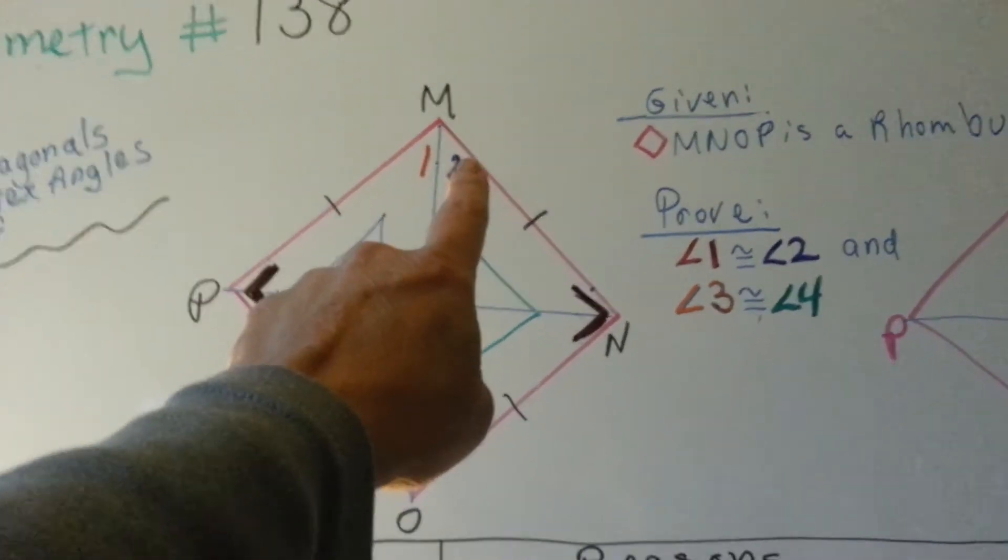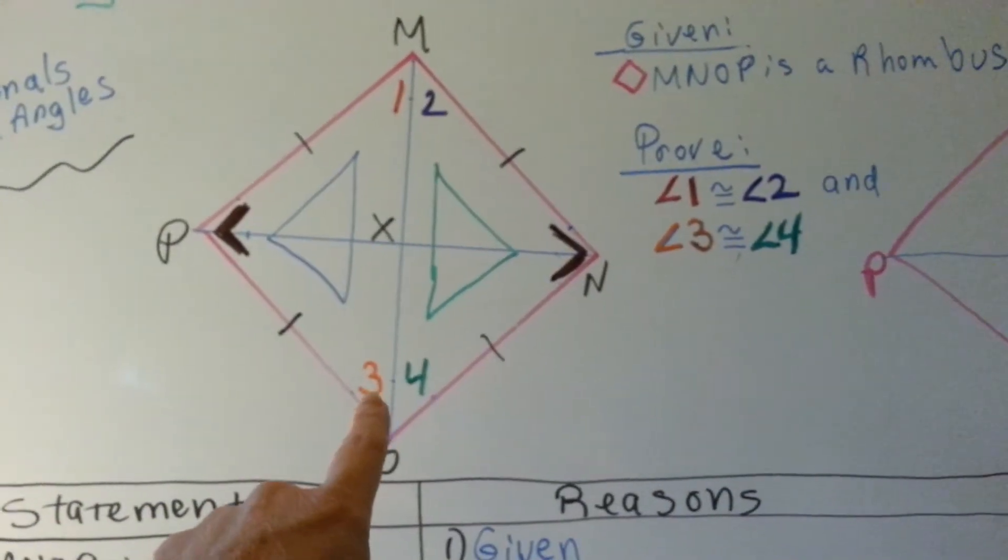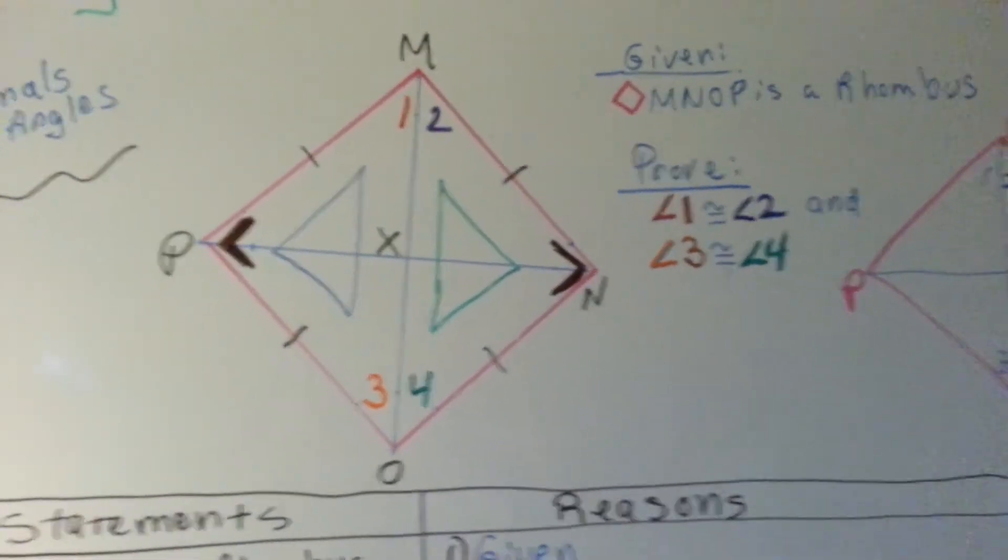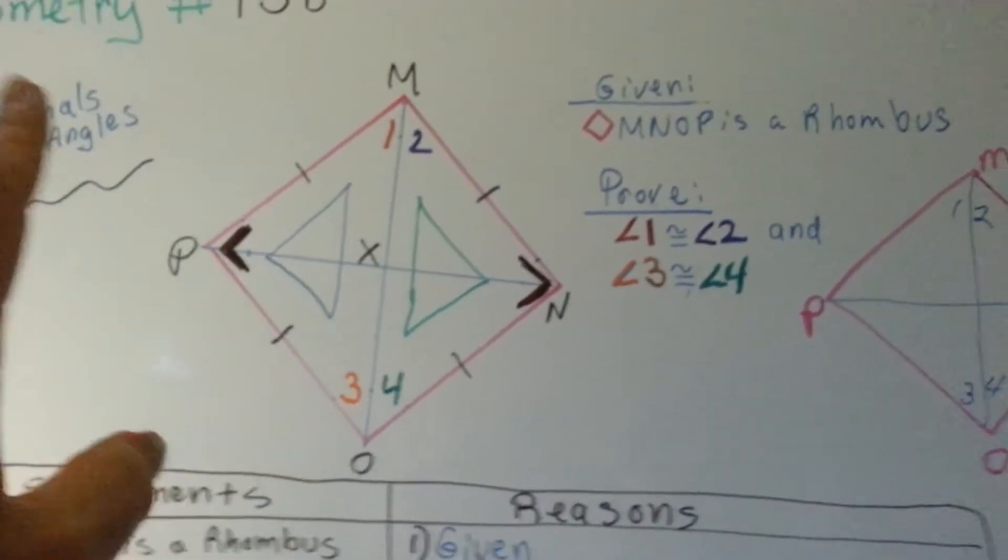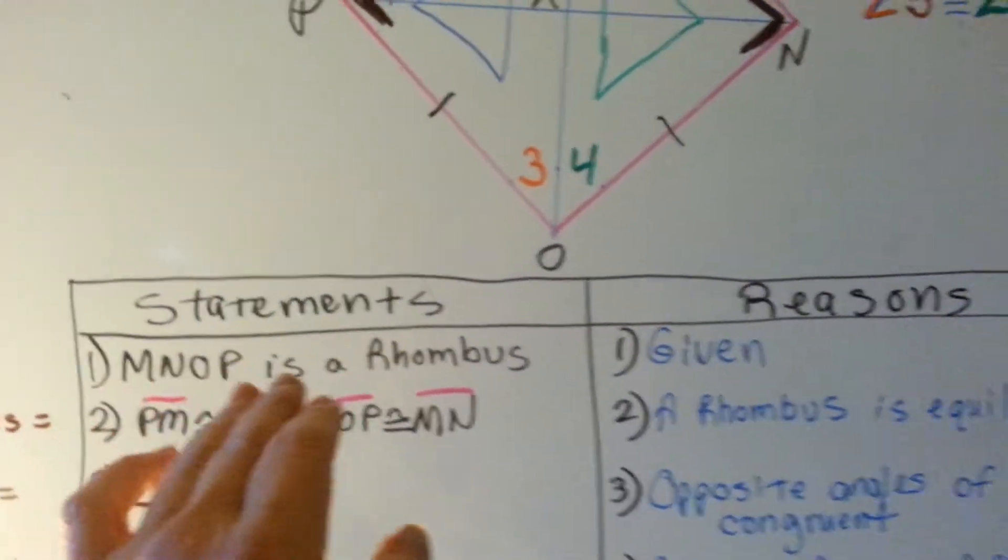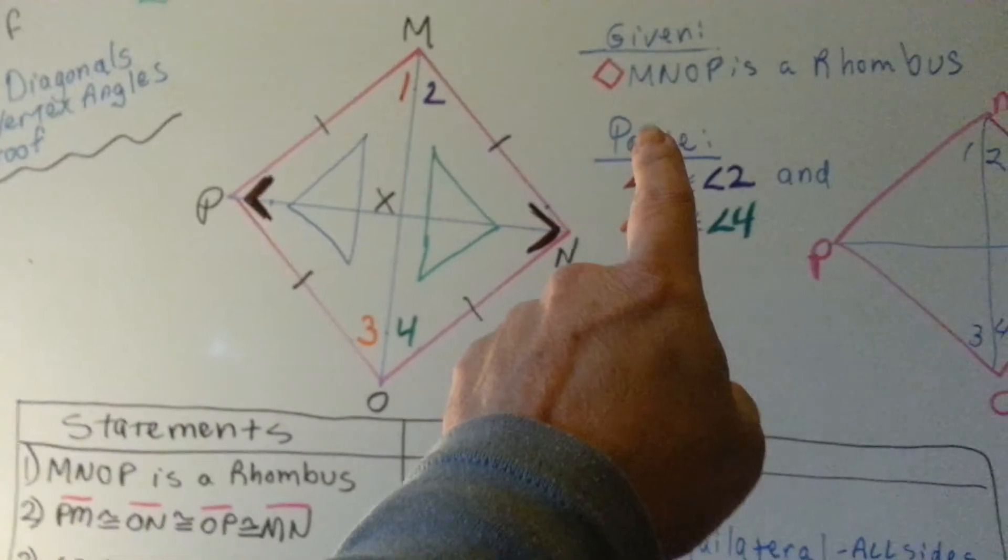It's saying that the red one and the purple one are congruent, and the green number and the orange number are congruent is what we're trying to prove. All we're given is that it's a rhombus. So what we do on our statement is we say M-N-O-P is a rhombus. That's given.